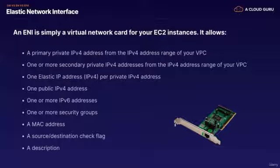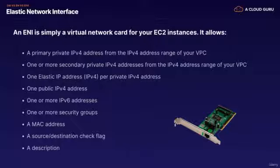An ENI is basically a virtual network card on your EC2 instance. When you provision an EC2 instance, it will have an ENI attached to it automatically, and you can add additional ones. It allows a primary private IPv4 address from your VPC's address range, one or more secondary private IPv4 addresses, one Elastic IP per private IPv4 address, one public IPv4 address, one or more IPv6 addresses, one or more security groups, a MAC address, and a source and destination check flag.